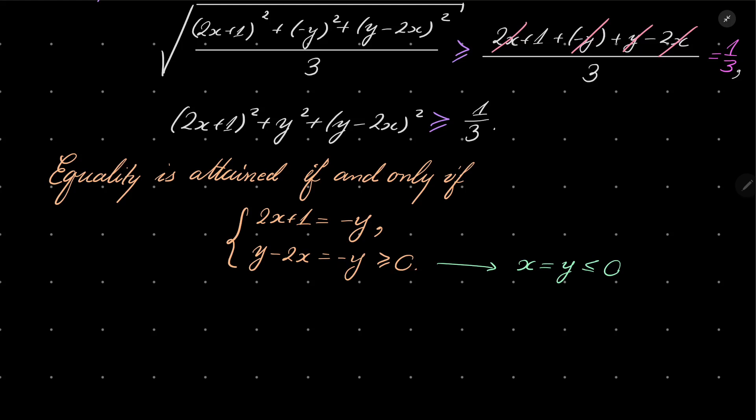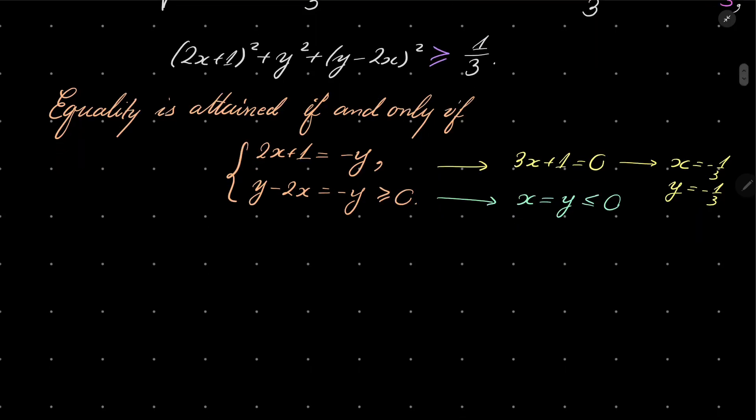And now by the first equation we get, well, -x is -y, so we have 3x + 1 equals 0, so x is -1/3 and y is also -1/3.